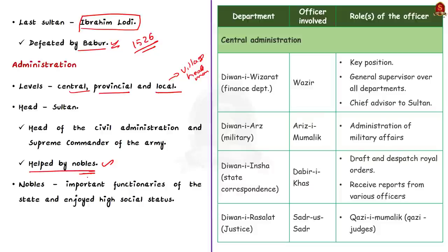Under the central administrative setup, there were important departments and offices. The most important office was Diwani Vizarat, the important office after Sultan's office, headed by a wazir. Wazir's role was of a general supervisor over all departments. He was the chief advisor to the Sultan and also looked after the financial organization of the state. So Diwani Vizarat was the finance department. There was also Diwani Arz, Diwani Inshah, and Diwani Rasalat.